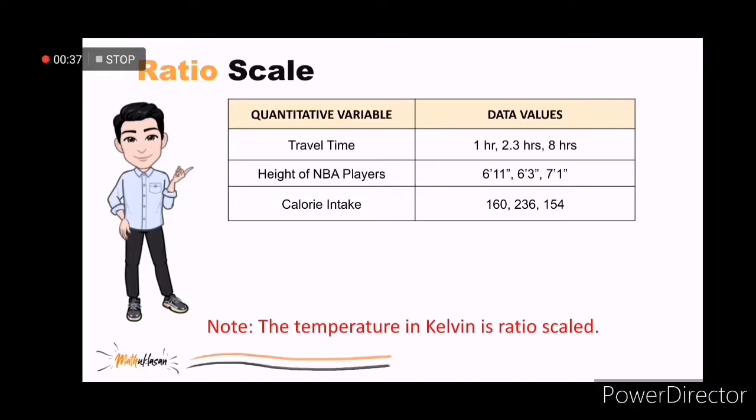Temperature is a trickier case. Fahrenheit and Celsius scales are interval but not ratio scales, while Kelvin temperature rating, in which zero degrees means no molecular motion, is ratio scaled.